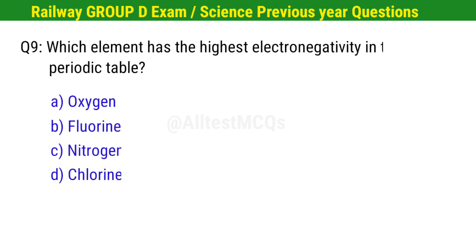Question No. 9. Which element has the highest electronegativity in the periodic table? Right option is B. Fluorine.